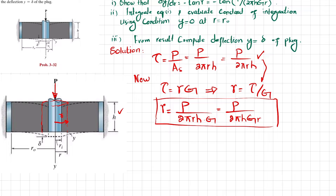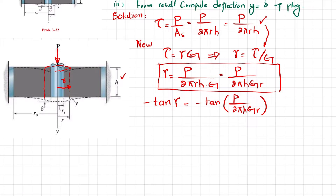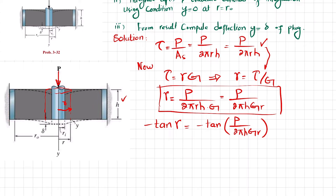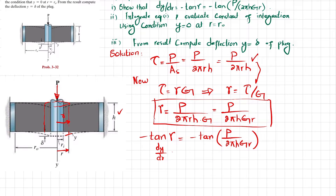Taking -tan on both sides, tan(γ) equals -tan(P / 2πhGr). This -tan(γ) is the slope of the line shown in the figure. Looking at the figure, the slope of this line is -tan(γ), which equals dy/dr — the rate of change of deflection with respect to r. This defines the slope. So dy/dr = -tan(γ) = -tan(P / 2πhGr).